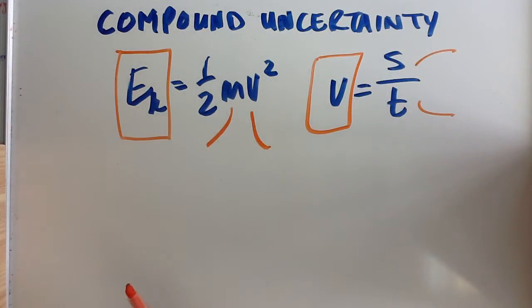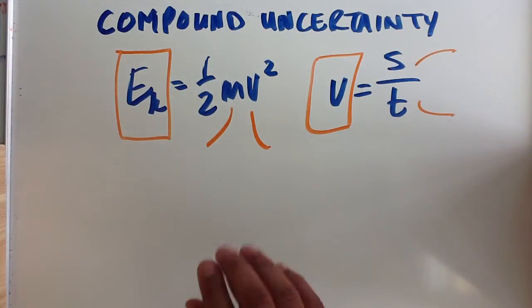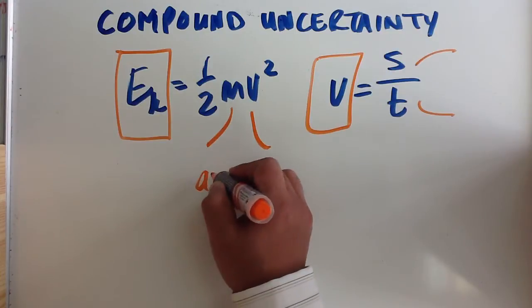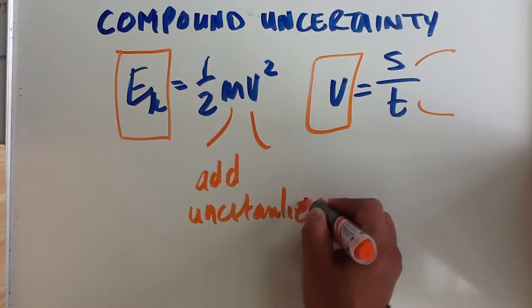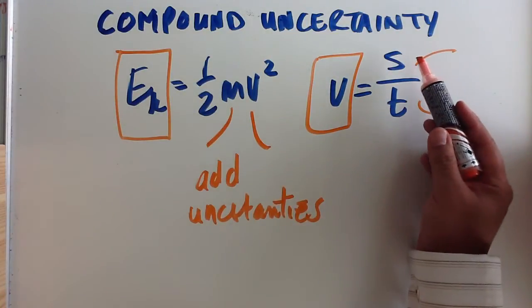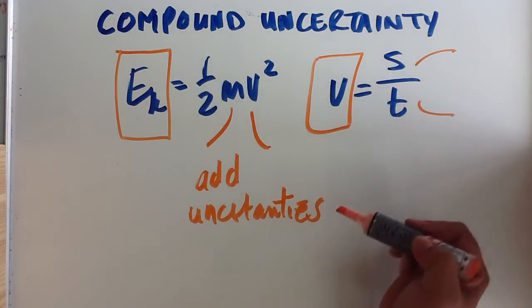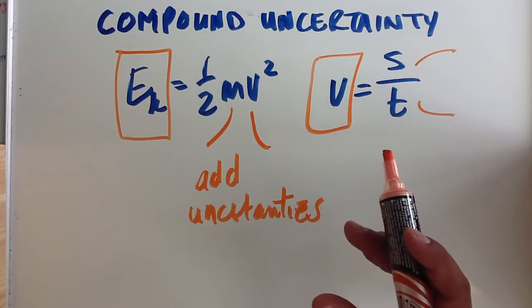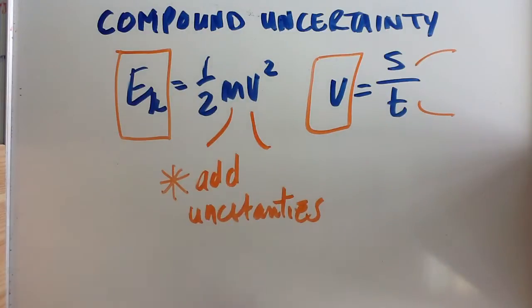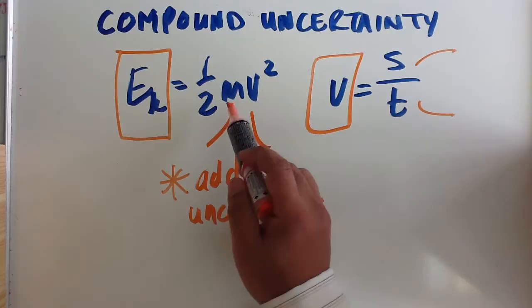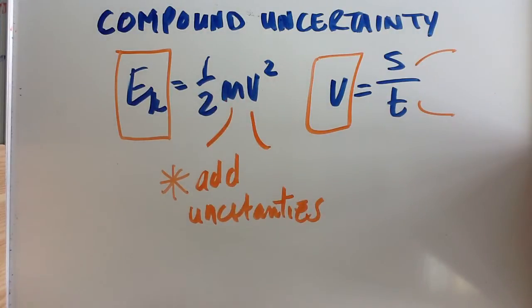Here the mass is multiplied by velocity. When two quantities are multiplied, you need to add uncertainties. In this case, you've got displacement divided by time. When two concepts are divided by each other, you also add uncertainties. So there's nothing much to remember. In both cases, you have to add the uncertainties of mass and velocity, and in this case, displacement and time.